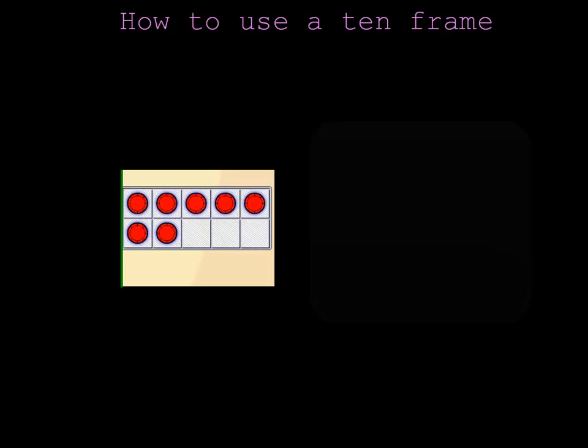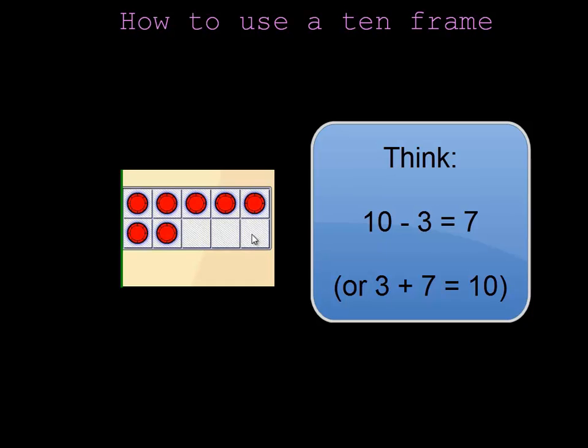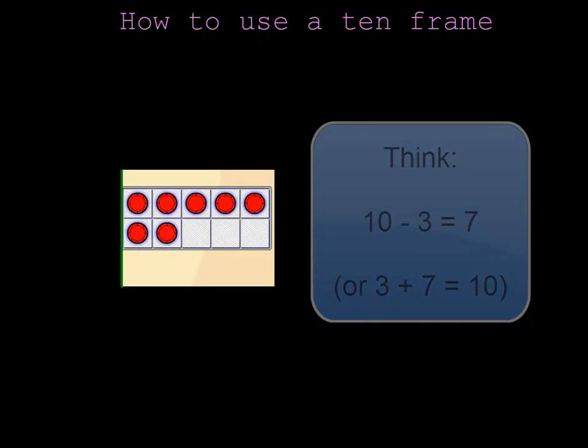Another way I can see that is I notice that there are 3 chips missing and I know that if 3 chips are missing, there must be 7 chips on the 10 frame because 7 plus 3 makes 10.